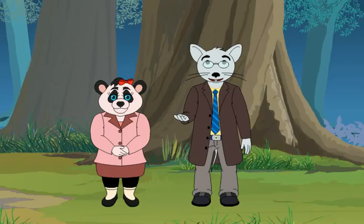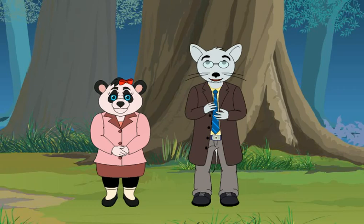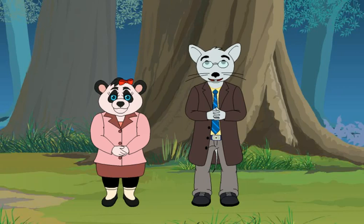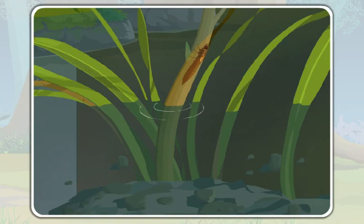You have already learnt that a cockroach does not have the pupal stage in its life cycle — a nymph of a cockroach directly grows into an adult. Like a cockroach, a dragonfly too does not have the pupal stage in its life cycle. After a dragonfly nymph grows completely, it comes out of the water and climbs up to the stem of a plant.